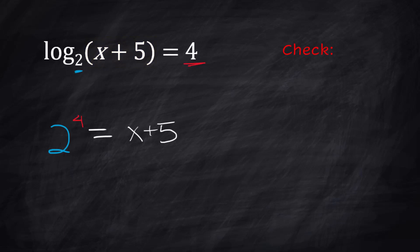2 to the 4th power is 16 equals x plus 5. Subtract 5 from both sides. We're coming up with x equals 11. Now let's just do a quick check in the original problem to make sure that makes sense, that that's going to work. Log base 2 of 11 plus 5. Log base 2 of 16. Does that equal 4?